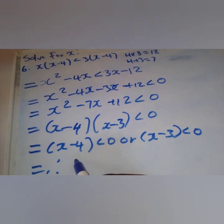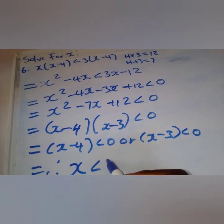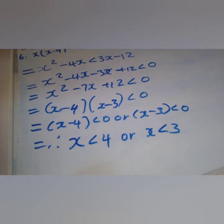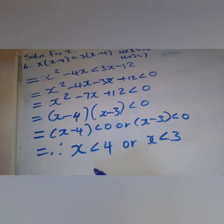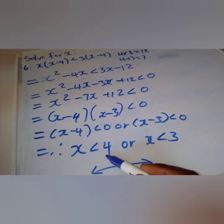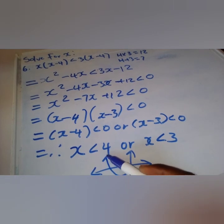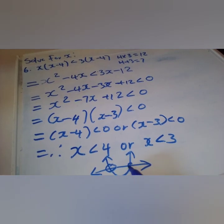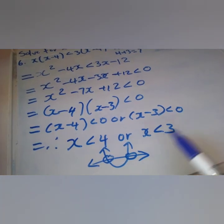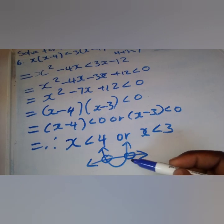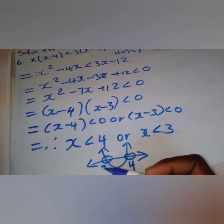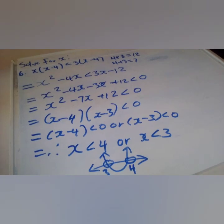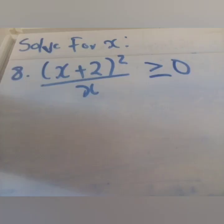Transposing gives x < positive four or x < positive three. We represent graphically using the parabola. Since there is no less than or equal to sign, we use the open dot. Both answers are positive, so the larger value, four, goes to the right-hand side and the smaller value, three, goes to the left-hand side.